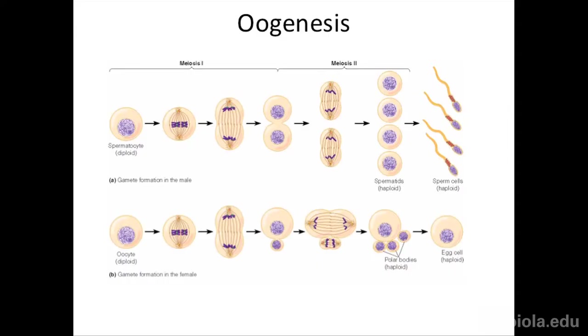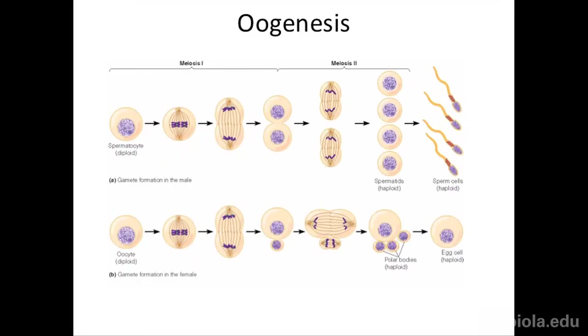The same happens in the second division — the spindle is shifted to one side, making a really tiny cell and a bigger one. Once a cell is a tiny polar body, it's not going to become an egg. The egg is the one with all the cytoplasm and all the embedded proteins. All the polar bodies basically just get reabsorbed — they're not going to do anything else.